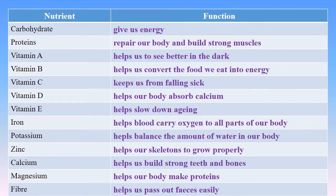Now we will see the function of each nutrient. Carbohydrates give us energy. Proteins repair our body and build strong muscles. Vitamin A helps us to see better in the dark. Vitamin B helps us convert the food we eat into energy. Vitamin C keeps us from falling sick. Vitamin D helps our body absorb calcium. Vitamin E helps slow down aging.